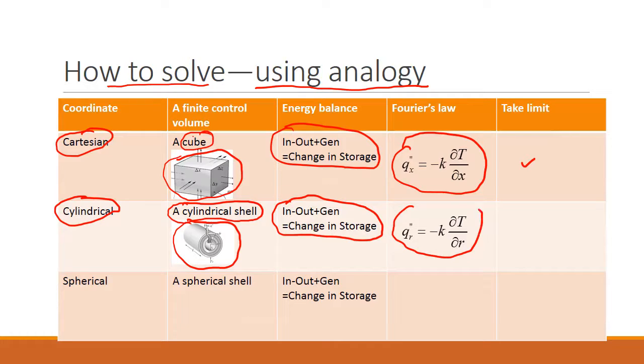We used Fourier's law in the radial direction and then the equation we got, we took limits of that. The spherical system, we are guessing it'll probably work the same way. We need to get a spherical shell and then do in-minus-out plus generation, and then the Fourier's law appropriately and then take limit. At this point we think this might work.